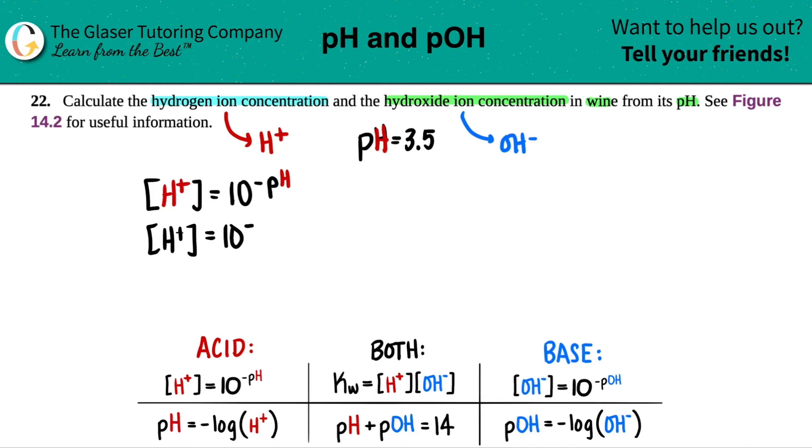10 to the negative, whatever that value was, 3.5. And maybe I'll just put that as beautiful. Okie dokie. So calc is out. H+ concentration is just going to be 10 to the negative 3.5.